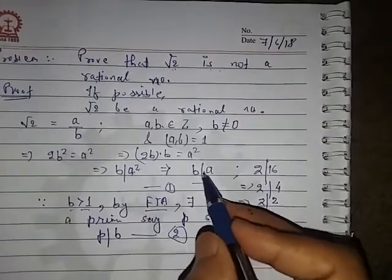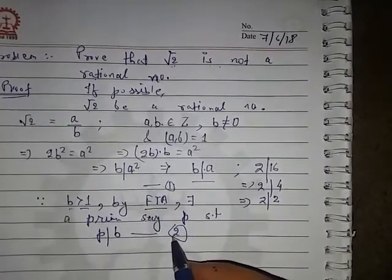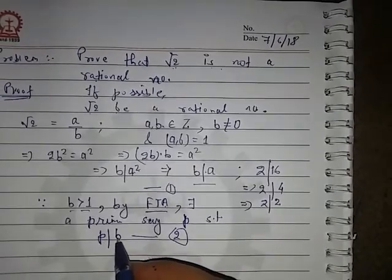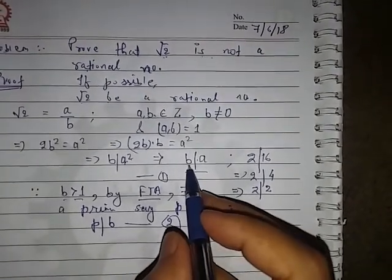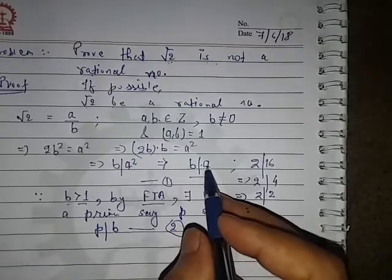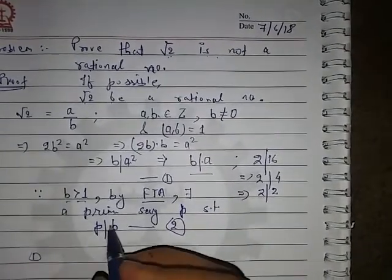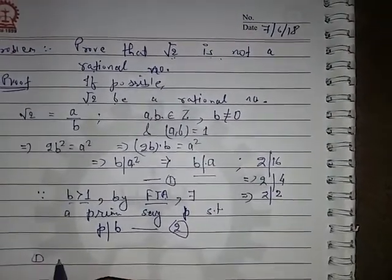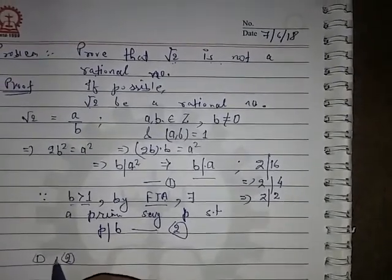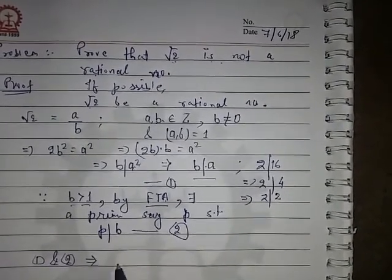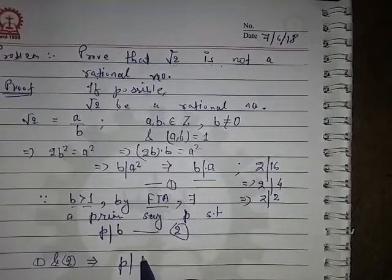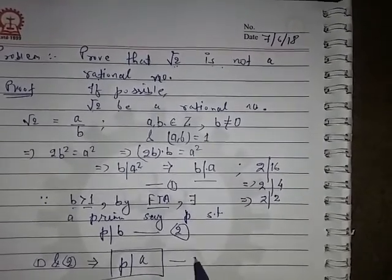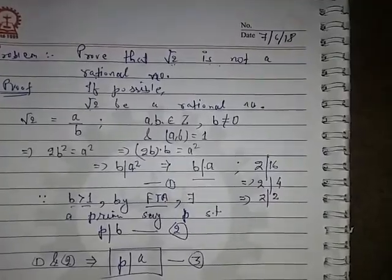Then from equation 1 and equation 2, we can see that p divides b and b divides a squared, so p also divides a. Equations 1 and 2 together imply that p divides a. Let this be equation number 3.